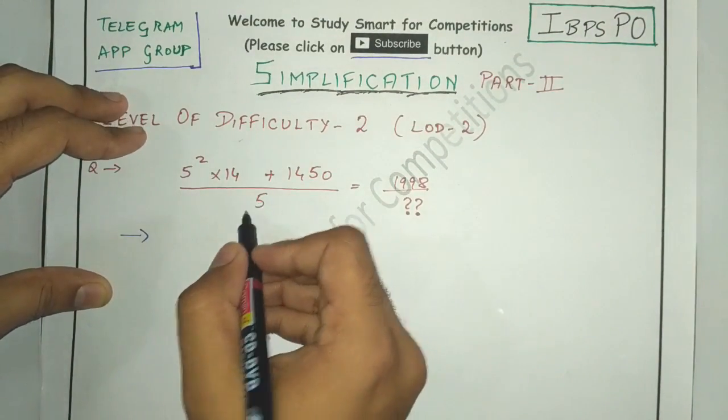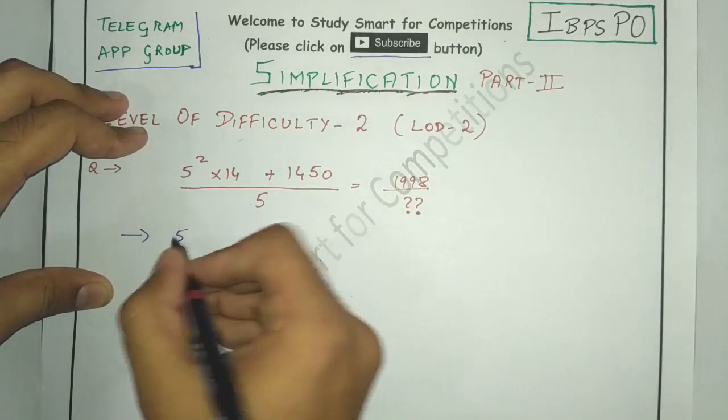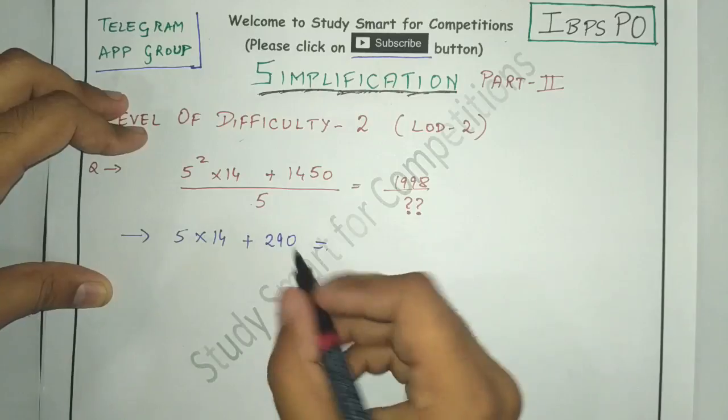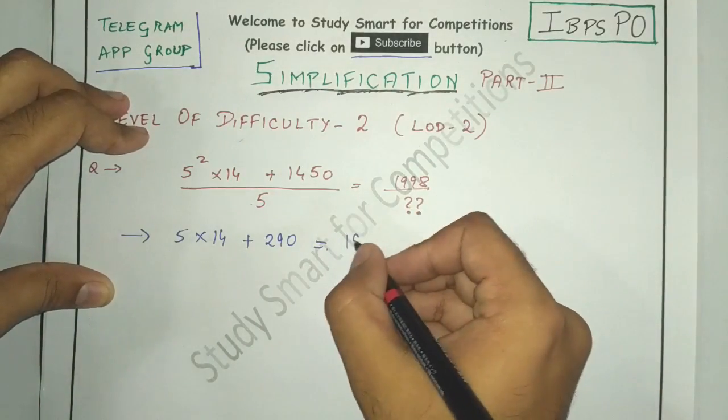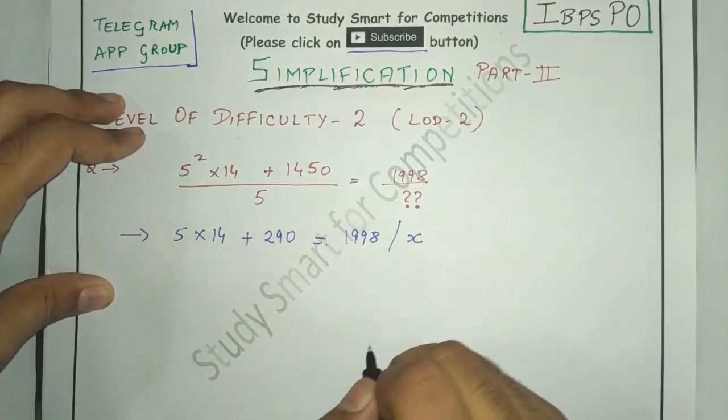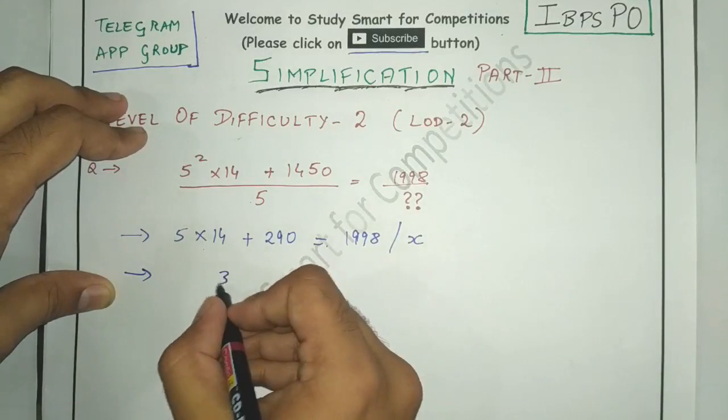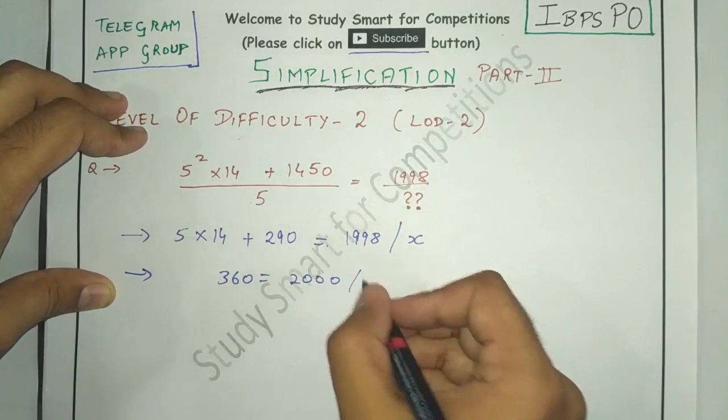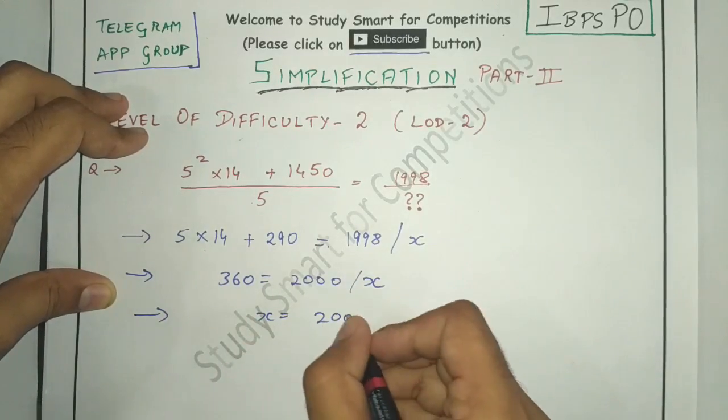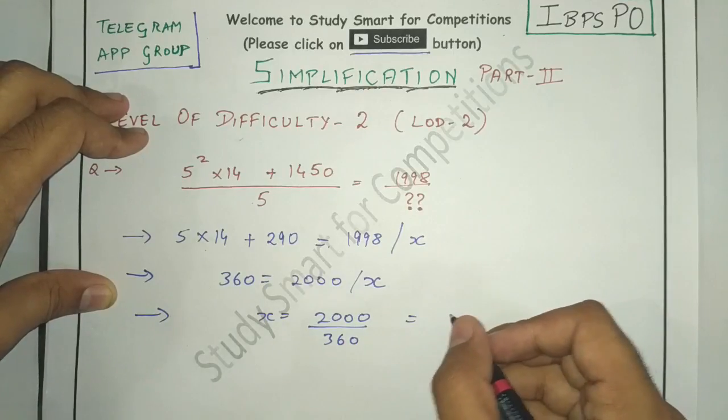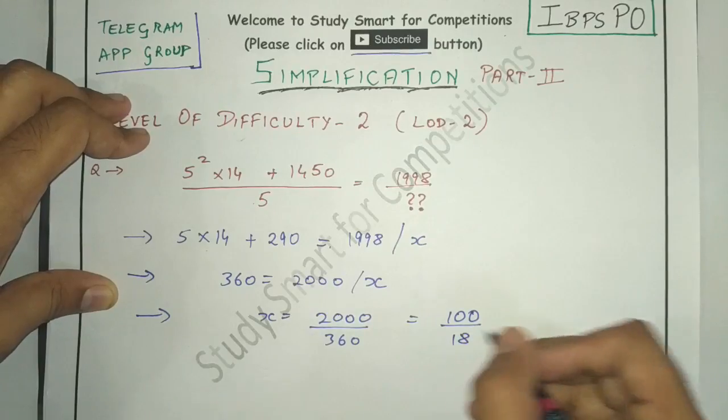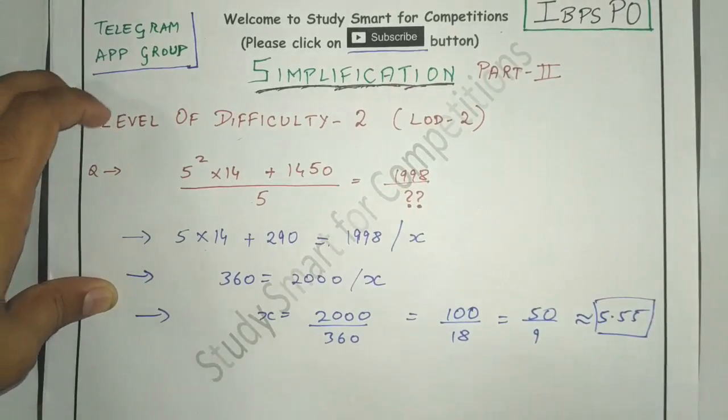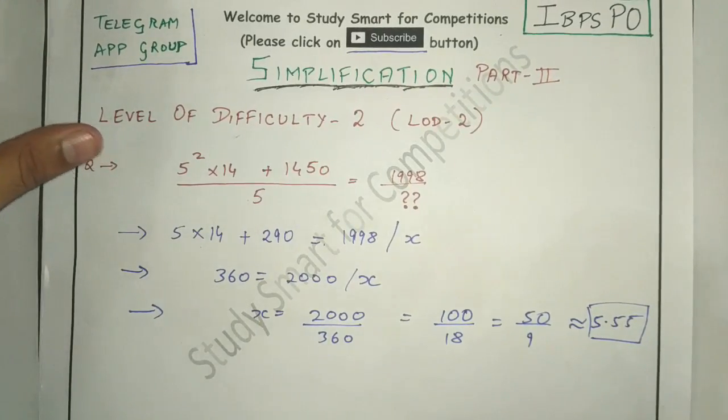If I would be you, I'll just deduct the 5 from each of the numerals. So it will be 5 cross 14, dividing that it will be 290. So it's 70 plus 290 that is 360 equals to approximate value 2000 divided by x. That will give me x equals to 2000 by 360, which is 100 by 18, which gives me 50 by 9, which is approximately equals to 5.55. It hardly took me 10 seconds.